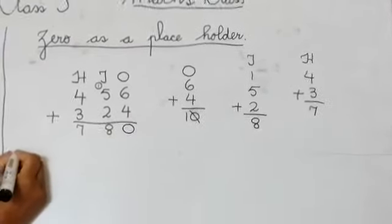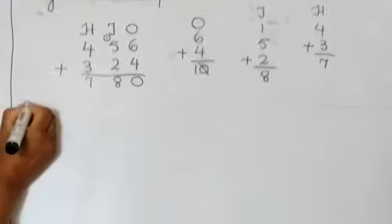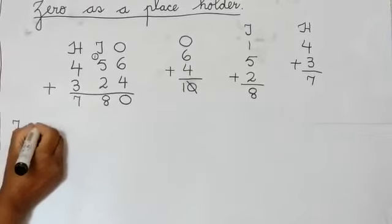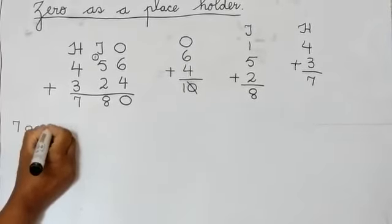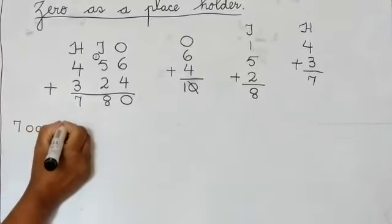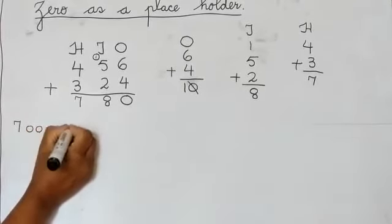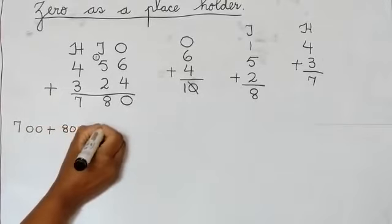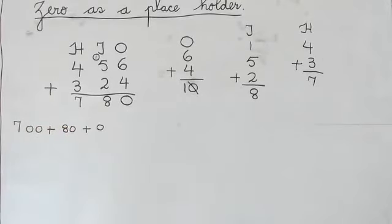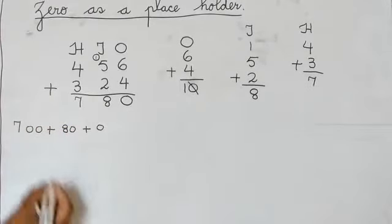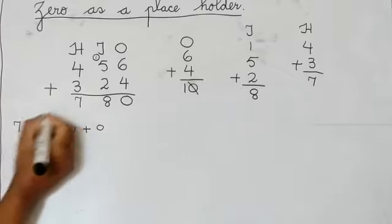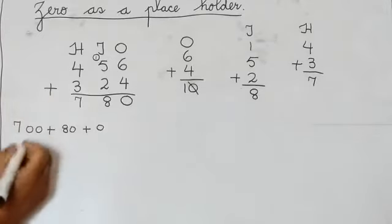Now we will break the number: 700 plus 80 plus 0. Do you understand? Then next step is place value: 7 hundreds, 8 tens, and 0 ones.